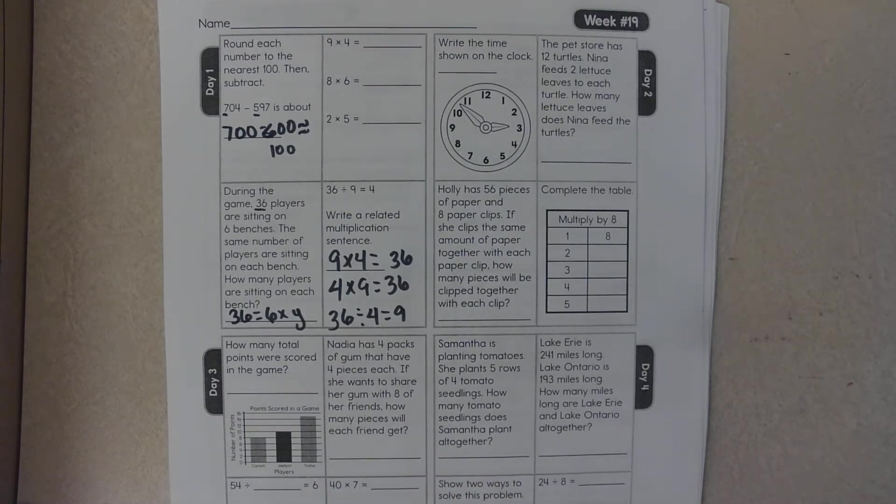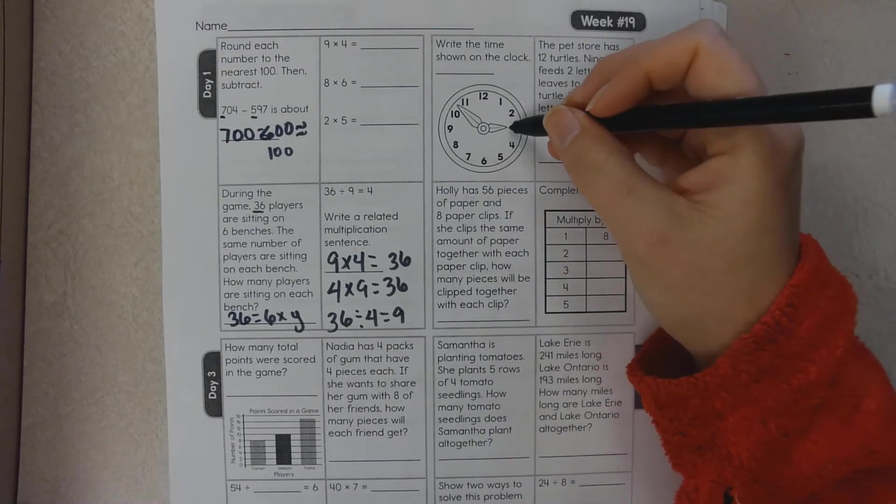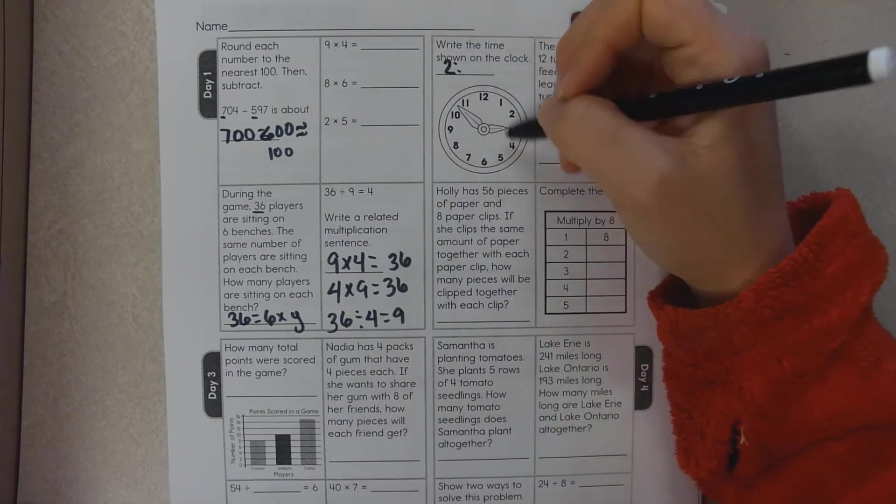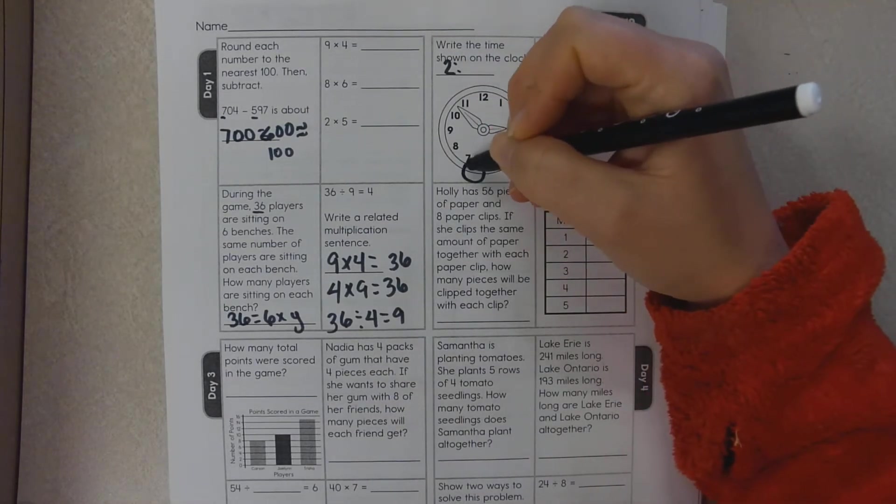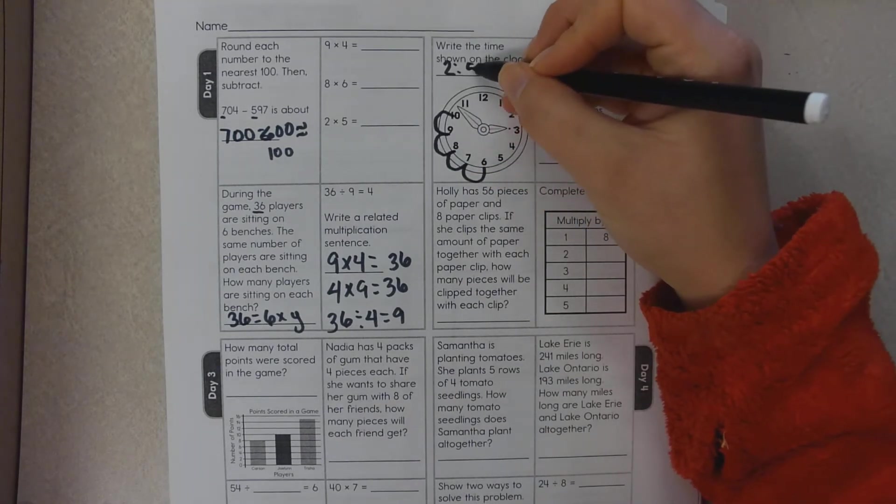Hello boys and girls, we are on day two, week 19 math for today. The first thing we're going to be looking at is what is this time. It is almost three o'clock but not quite, so it's two something. This goes to 30, 35, 40, 45, 50, and it's somewhere in the middle. So I'm going to say it's about 2:53.